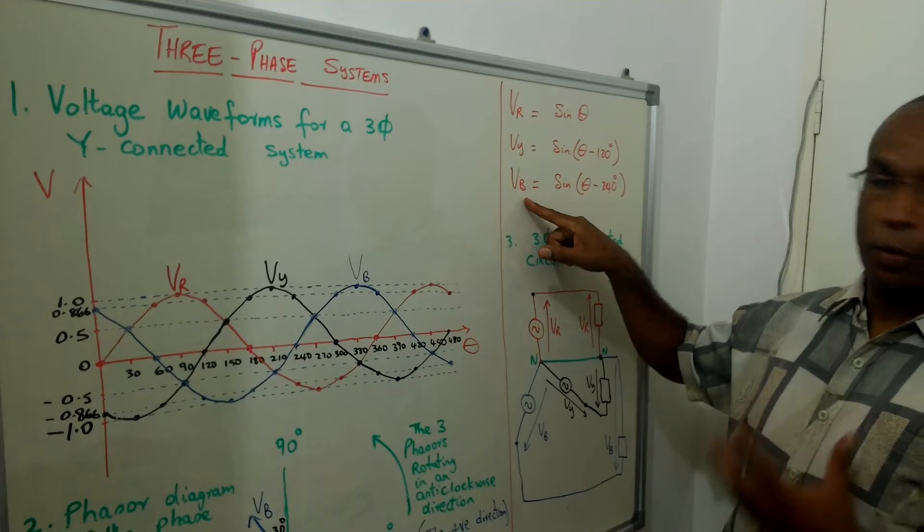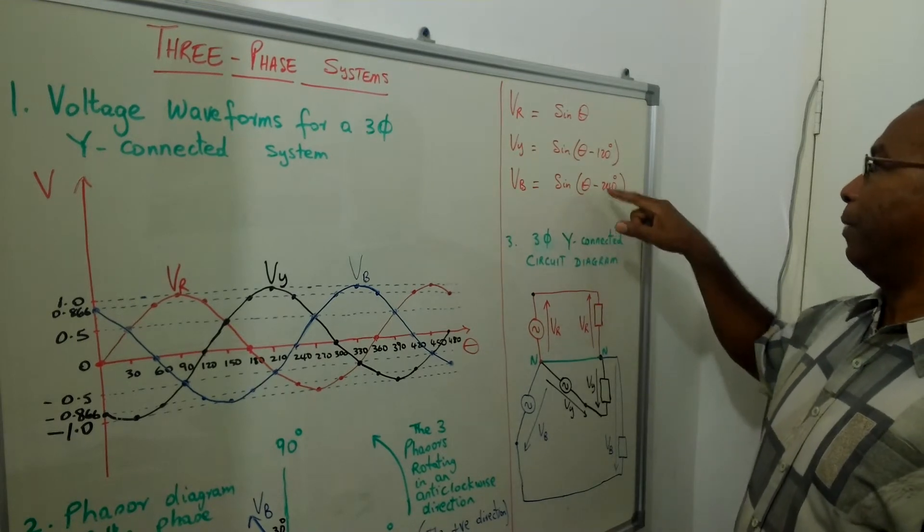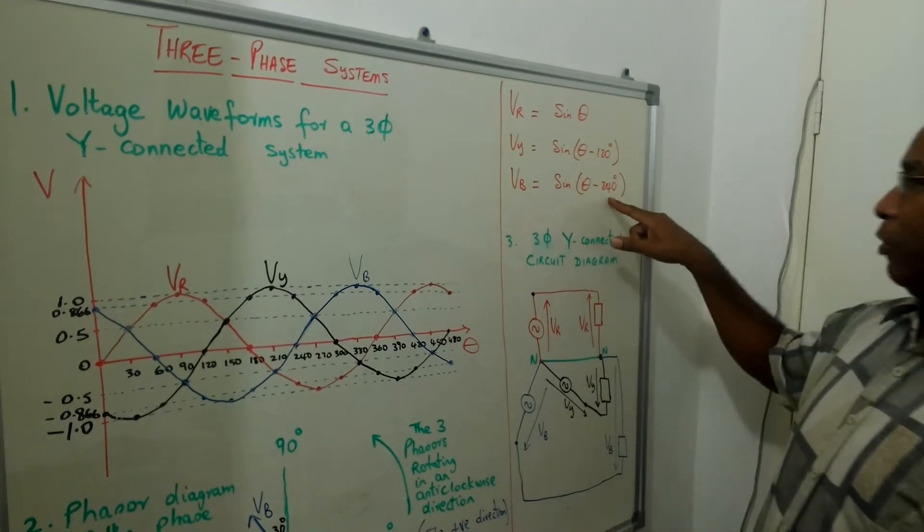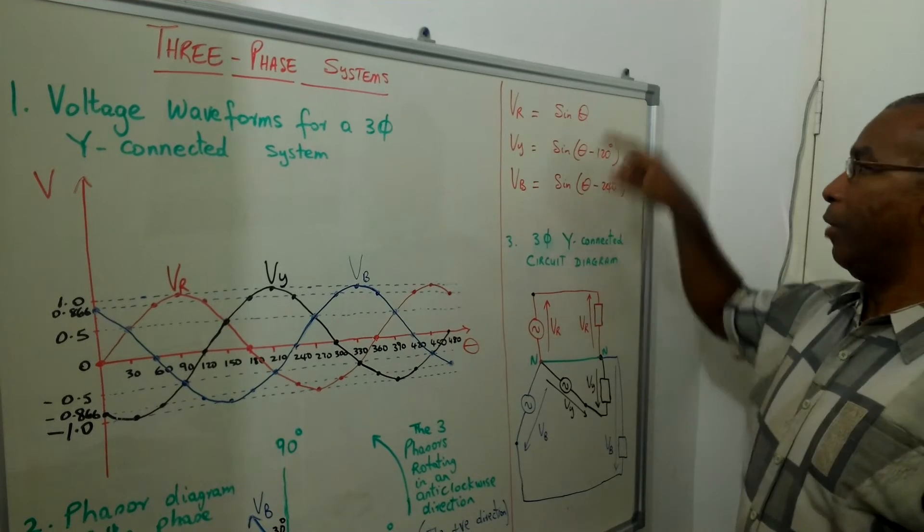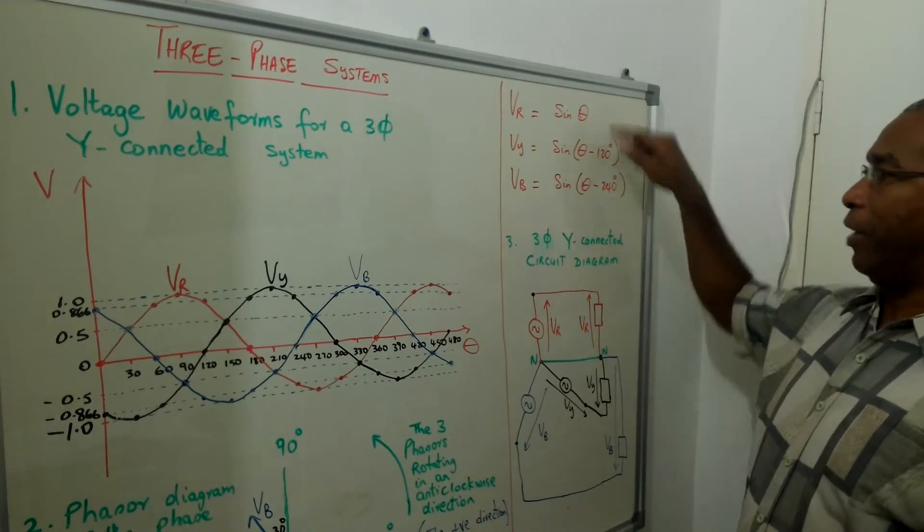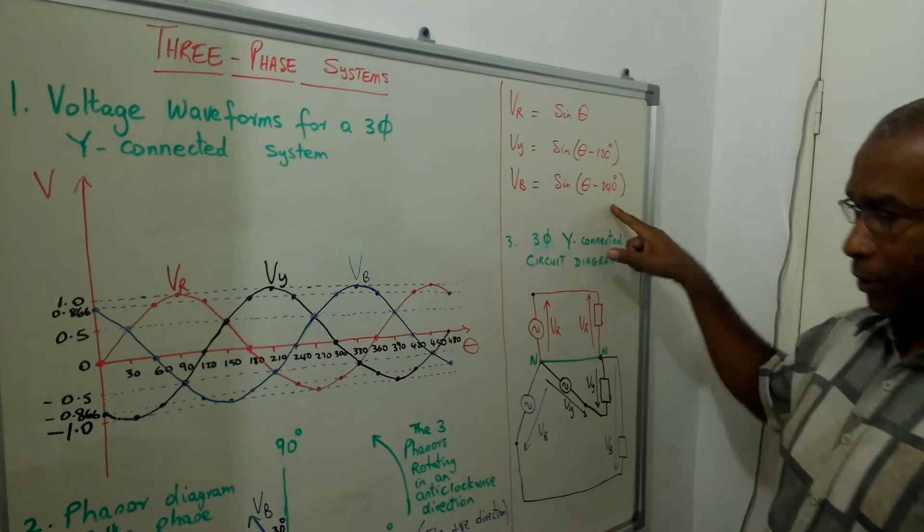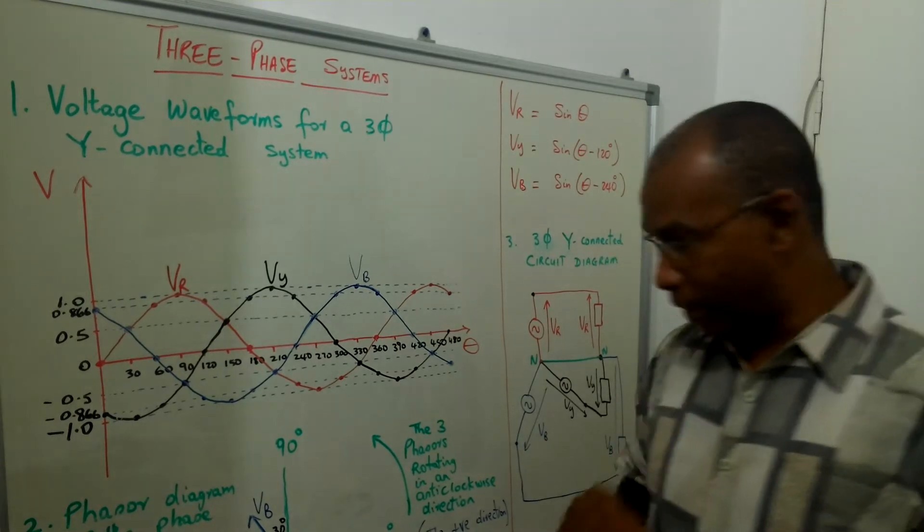Similarly, the voltage in the blue phase would be lagging VY by 120 degrees. So VB with regards to the reference is sine into theta minus 240 degrees.